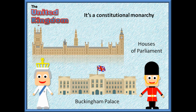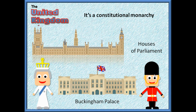The United Kingdom is a monarchy, and it is ruled by the Queen — the Queen of England. The Queen of England lives in Buckingham Palace. You can see the Union Jack here. The palace is guarded and protected by the guards.